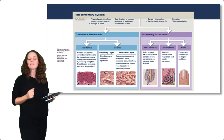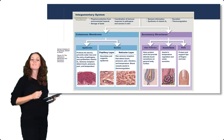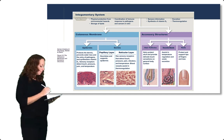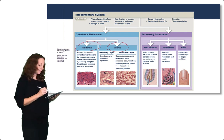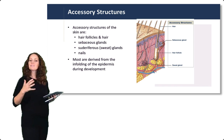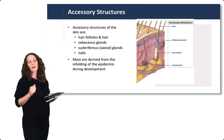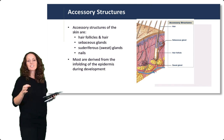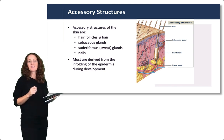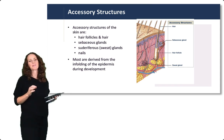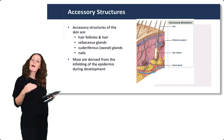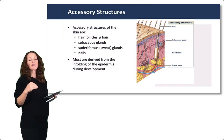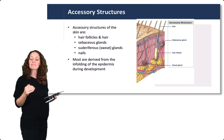Overall, the integumentary system is made up of the skin, which is the cutaneous membrane, made up of the epidermis and the dermis, and its accessory structures: the hair, glands, and nails. Accessory structures of the skin are hair follicles and hair, sebaceous glands which are oil glands, sudoriferous glands which are sweat glands, and the nails. Most of these structures are derived from embryonic tissue which also gave rise to the epidermis during development.